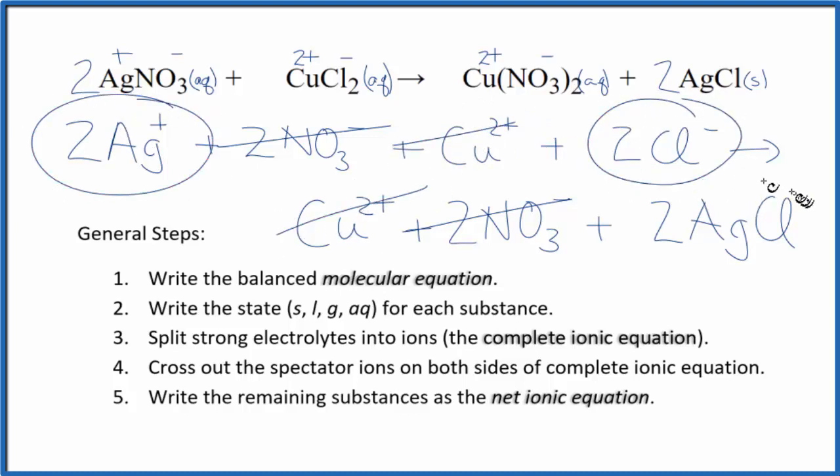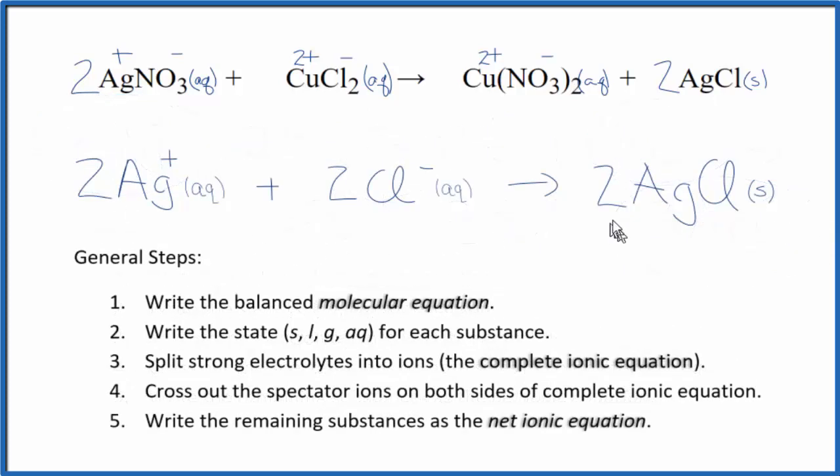I'll clean this up and add the states in, and we'll have our net ionic equation. So this is our balanced net ionic equation for silver nitrate plus copper 2 chloride. You'll notice we have coefficients 2, 2, 2. We can reduce that to a lower number, to 1, 1, 1. We don't write the ones. And this will give us a more compact net ionic equation.